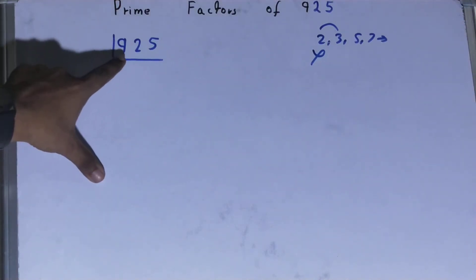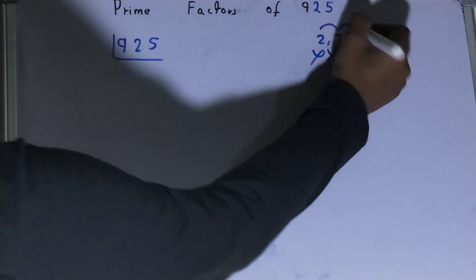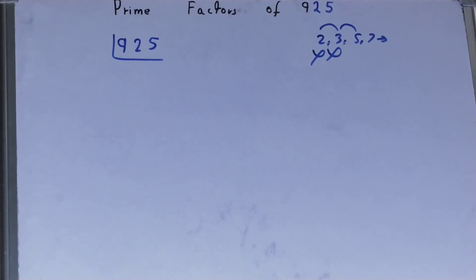...this divisible by 3? Let's check. 3 times 30 is 90, not 925, so not divisible by 3. Let's check with the next lowest prime number, that is 5. The last digit is 5, so yes, it is divisible by...